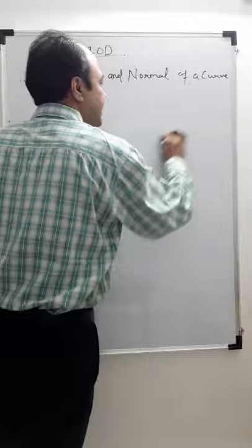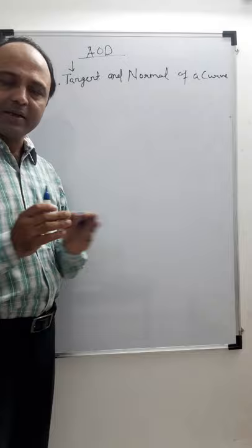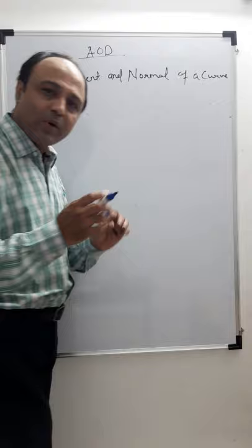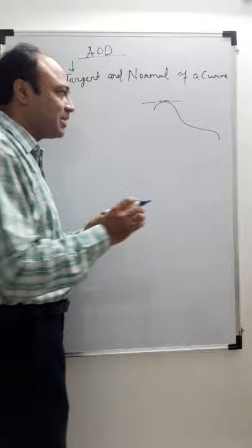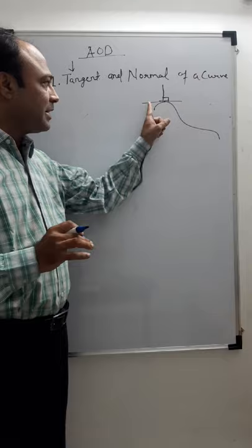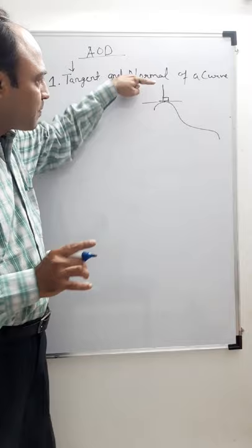In calculus, regarding tangent and normal, first we must understand: a tangent is a straight line which touches the curve at one point. So this is known as the tangent. A normal is again a straight line which is perpendicular to the tangent. This is the basic definition of tangent and normal to a curve.